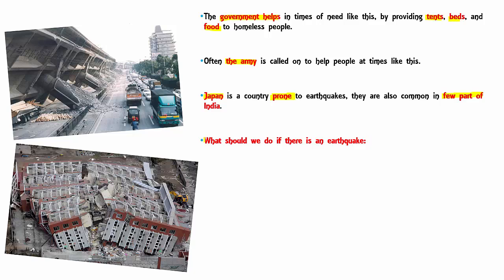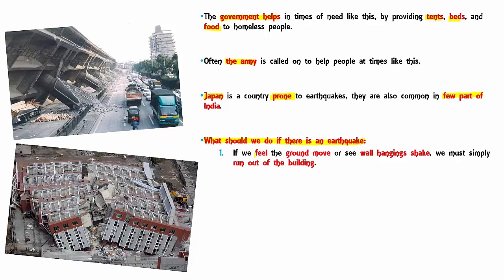The important question we must understand is: what should we do if there is an earthquake? These are simple survival tactics. First, if you feel that the ground is moving or the wall hangings are shaking by themselves, simply run out of the building. You are a lot safer outside where nothing can fall on your head, rather than inside when the entire roof can crash on your head.